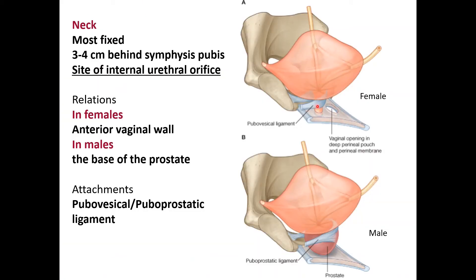The neck of the urinary bladder is the most fixed part. It is present 3 to 4 centimeters behind the lower end of the pubic symphysis, just above it, and is the site of the internal urethral orifice. In females, it is related to the anterior vaginal wall; in males, it is surrounded by the prostate, with the base of the prostate attached to it. Important ligaments attached to the neck include the pubovesical ligaments in females and the puboprostatic ligaments in males, which extend to the lower part of the pubic symphysis to anchor the bladder.